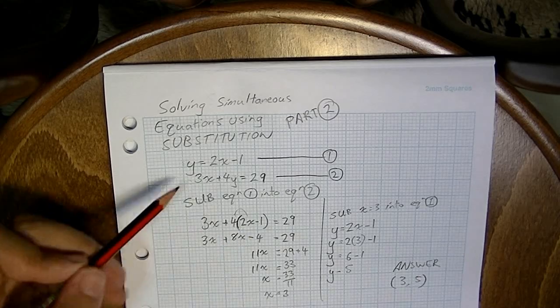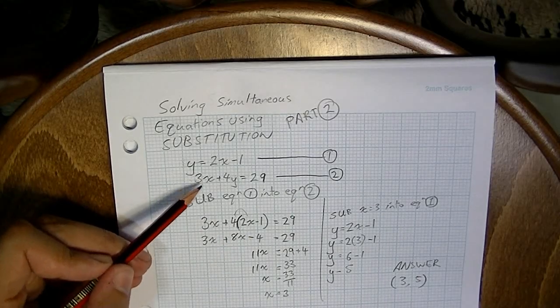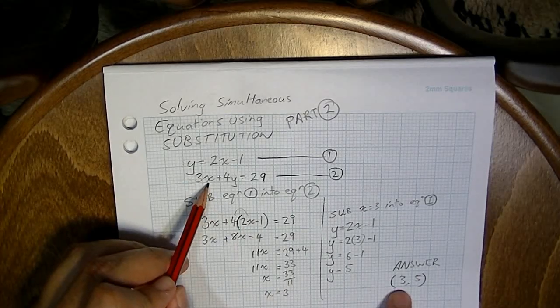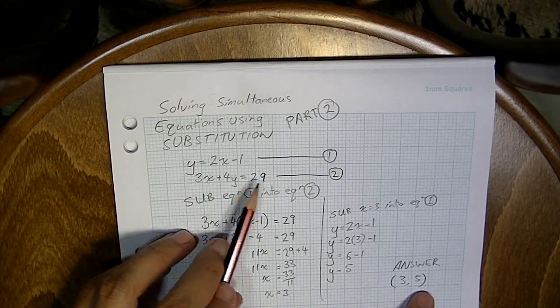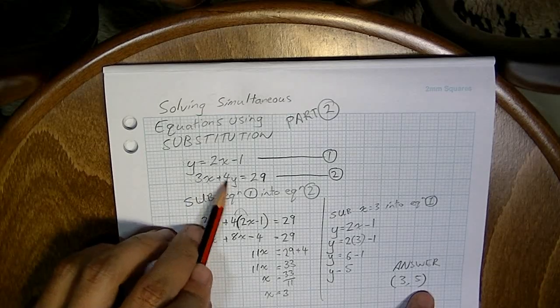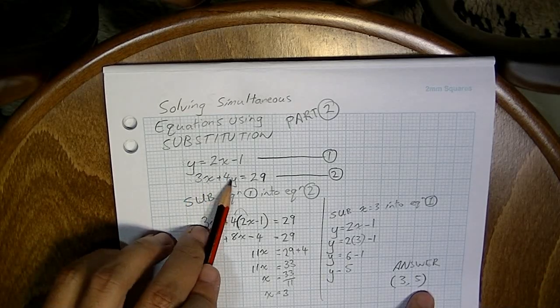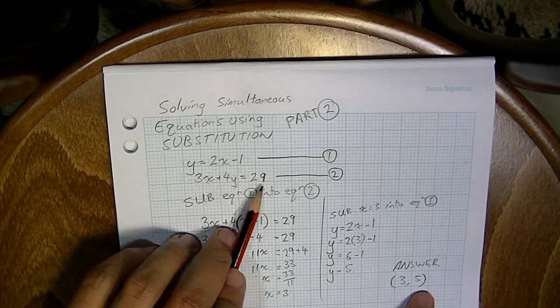Now, if you want to, you can check that by subbing it into this equation and making sure it makes sense. 3 times 3 plus 4 times 5 equals 29. 3 times 3 is 9, plus 4 times 5, which is 20. 9 plus 20 equals 29. 29 equals 29. Yep, it works in that equation.